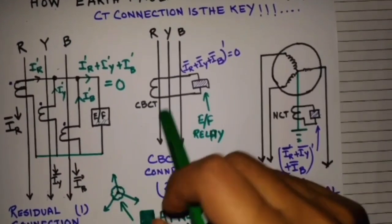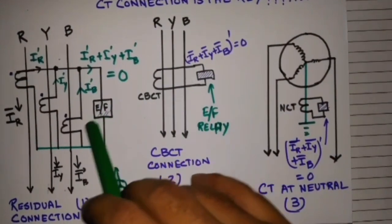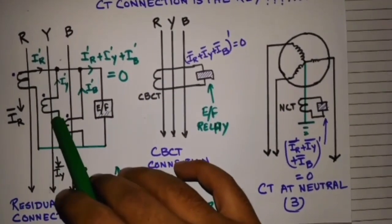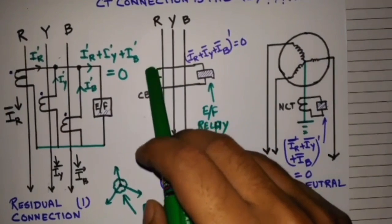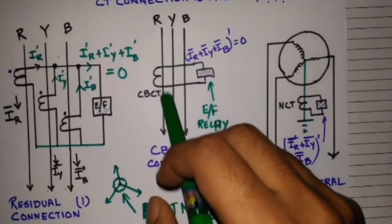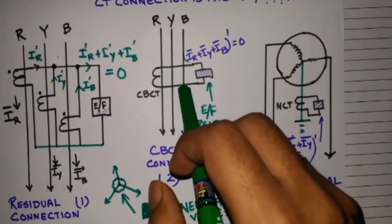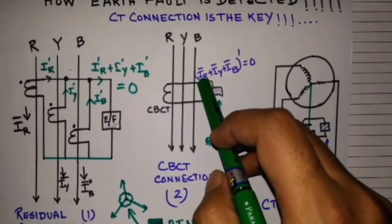Now our next connection is CBCT connection. CBCT connection has principally the same philosophy of the residual connection. Only difference is that the CBCT covers the three phases together. It has the primary of the three phases.